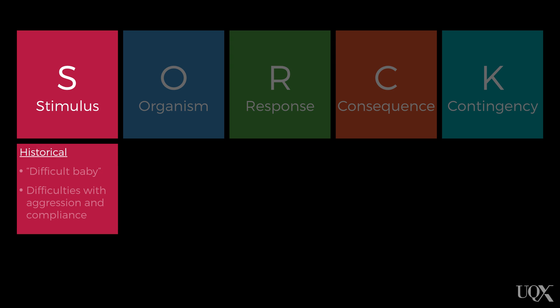The first one is historical. Historical stimuli have a bearing on the likelihood of whether or not the behavior is going to occur, but they don't directly elicit the behavior. Historical stimuli can include something that happened earlier that day, but also things that relate to the distant past.